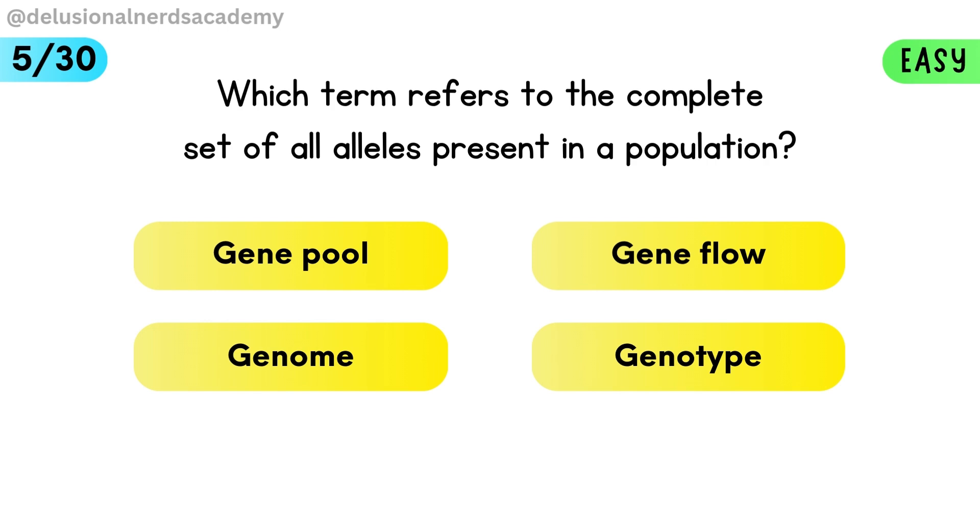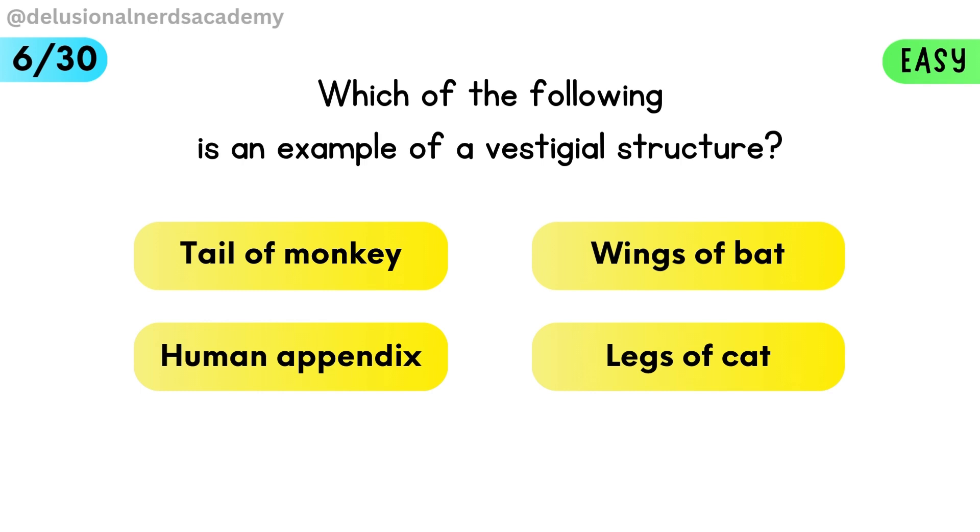Which term refers to the complete set of all alleles present in a population? The full collection of alleles in a population is called the gene pool. Which of the following is an example of a vestigial structure? The human appendix is a vestigial structure.